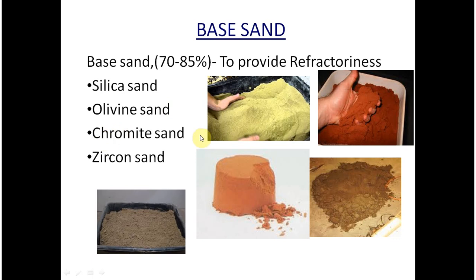Chromite sand is a solid solution of spinels. Its main advantages are a low percentage of silica, a very high fusion point of 1856 degrees Celsius, and very high thermal conductivity. However, the disadvantage is its high cost. Zircon sand is a compound of approximately two-thirds zircon oxide and one-third silica. It has the highest fusion point of all base sands at about 2600 degrees Celsius, with very low thermal expansion and high thermal conductivity.